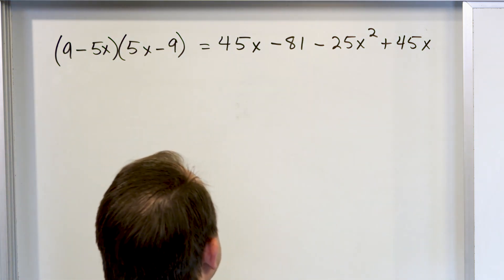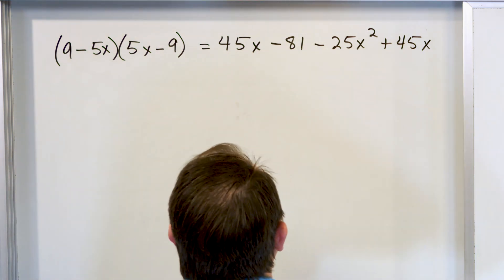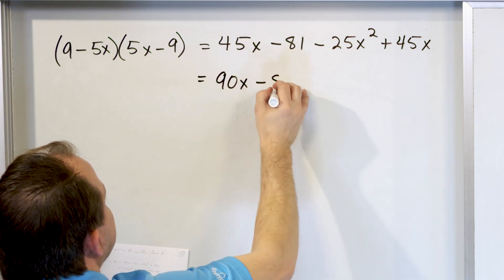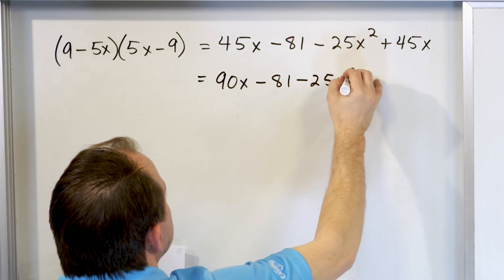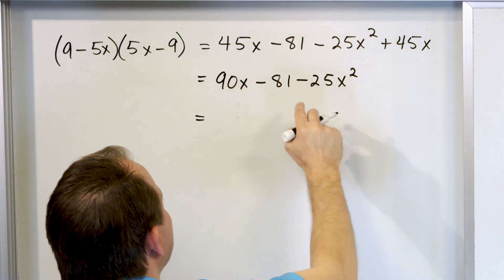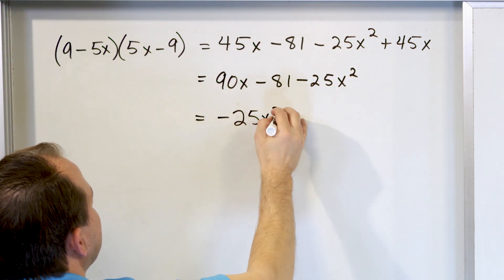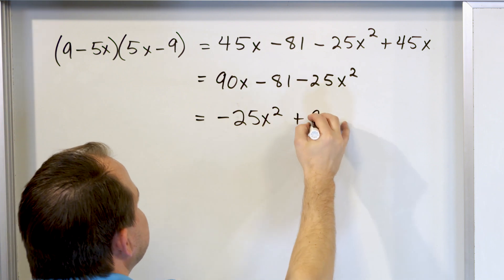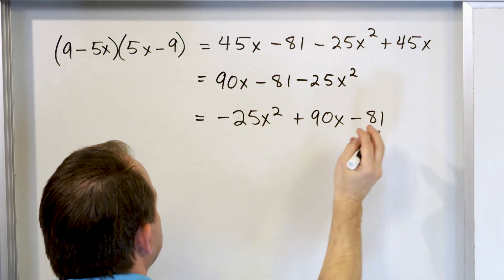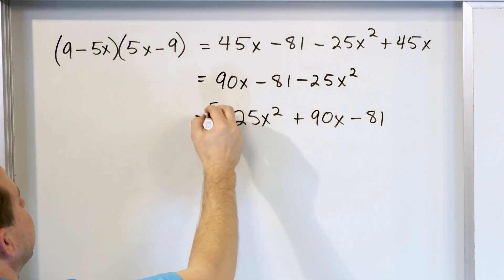Then look and see what can be combined. We have 45x and another 45x, so those combine to 90x, giving us 90x minus 81 minus 25x squared. Writing with the highest power of x first: negative 25x squared plus 90x minus 81. That's the final answer.